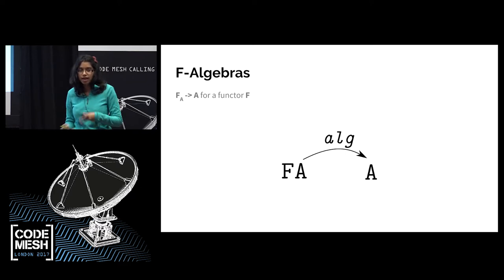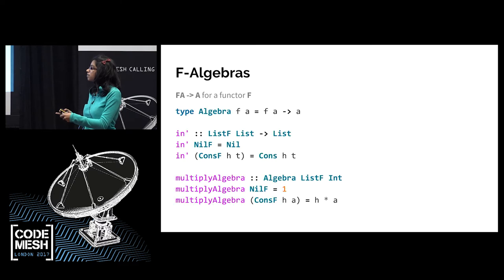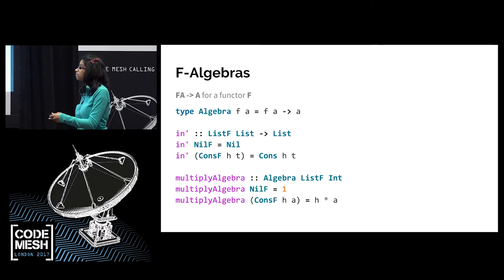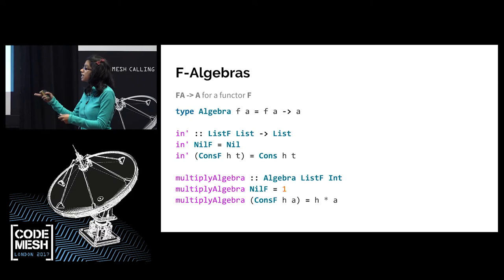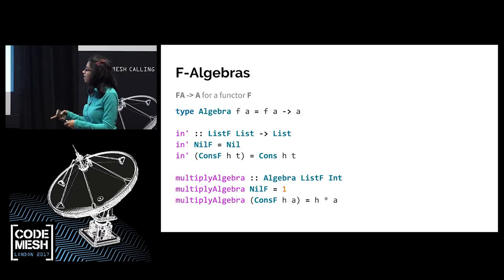Functors give us something called an F-algebra, which is just a complicated way of saying that I want to go from F(A) to A and I'll have an arrow to get there. So this is just a function that goes from F(A) to A. I can put a type alias for it in Haskell: `type Algebra f a = f a -> a`. You've already seen one of these — the `in` function I defined earlier is actually an F-algebra; it goes from `ListF(List)` to `List`. I'll define another one here called `multiplyAlgebra`: in the nil case return one; in the cons case I've got two integers and I multiply those together.